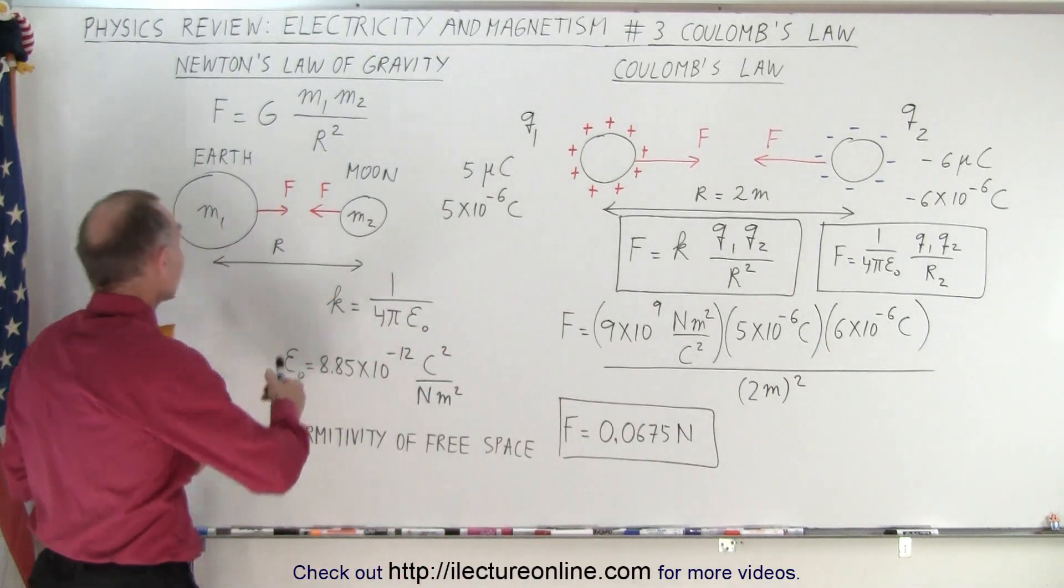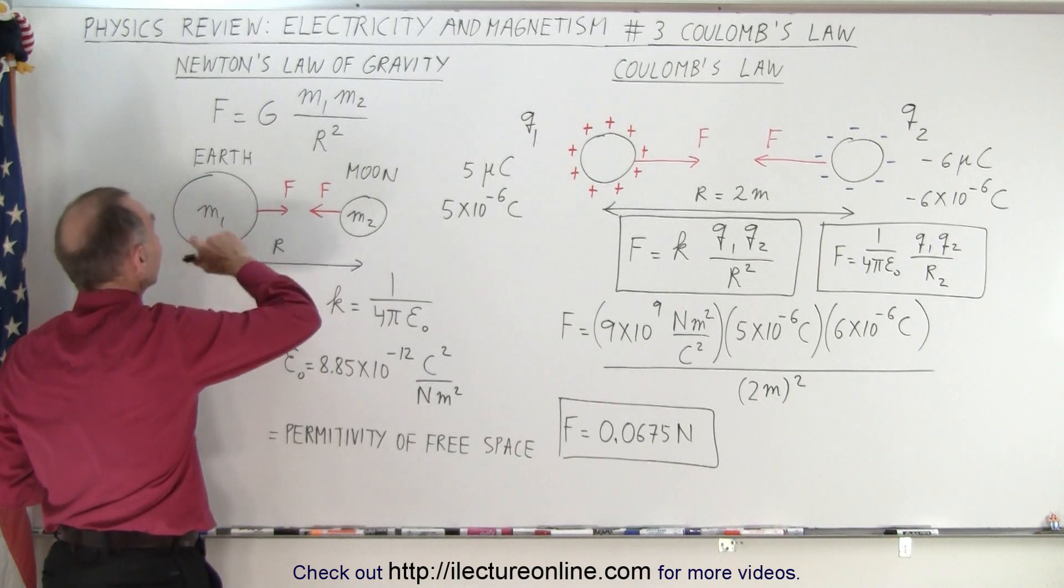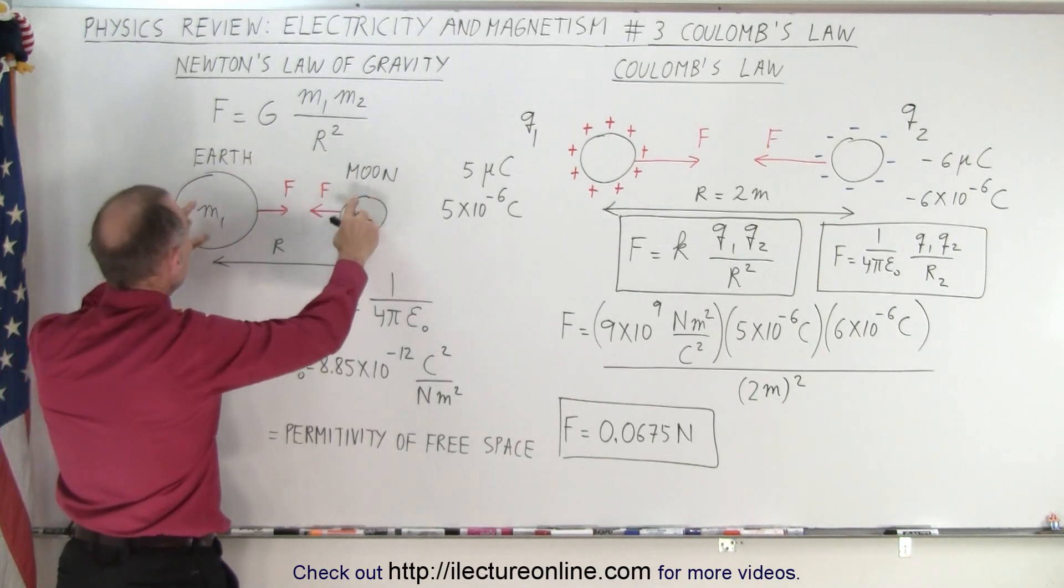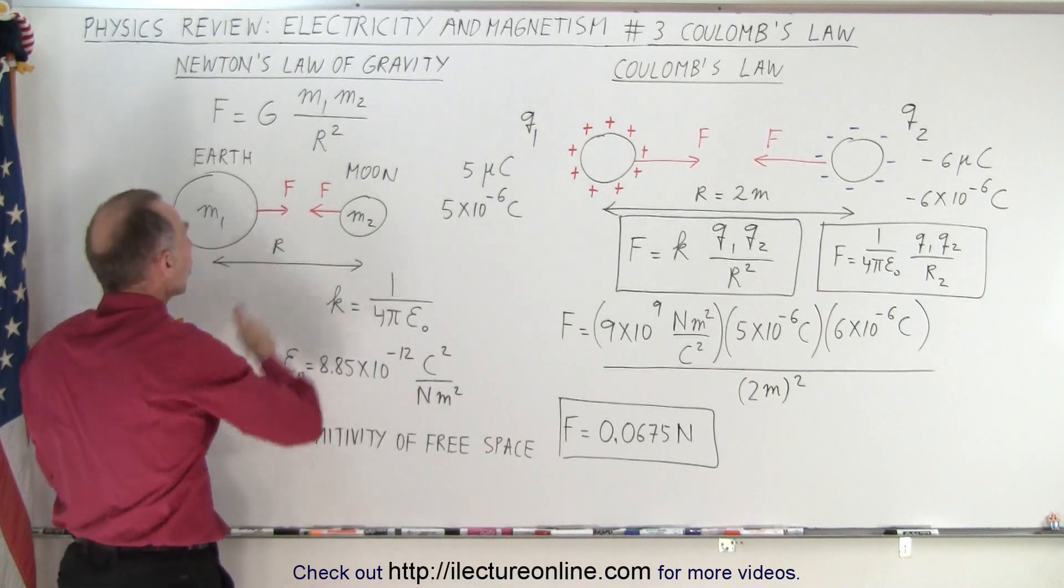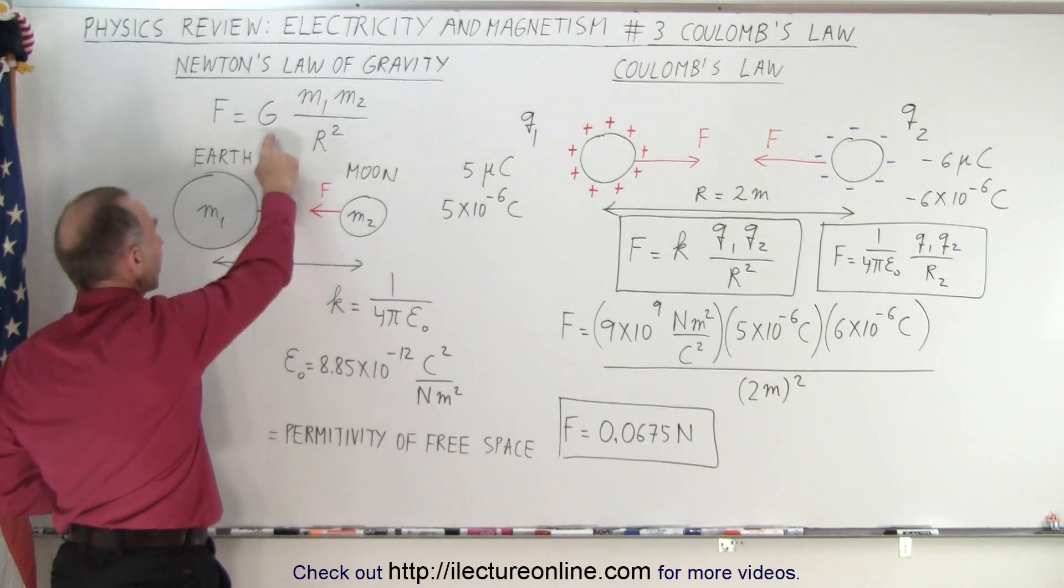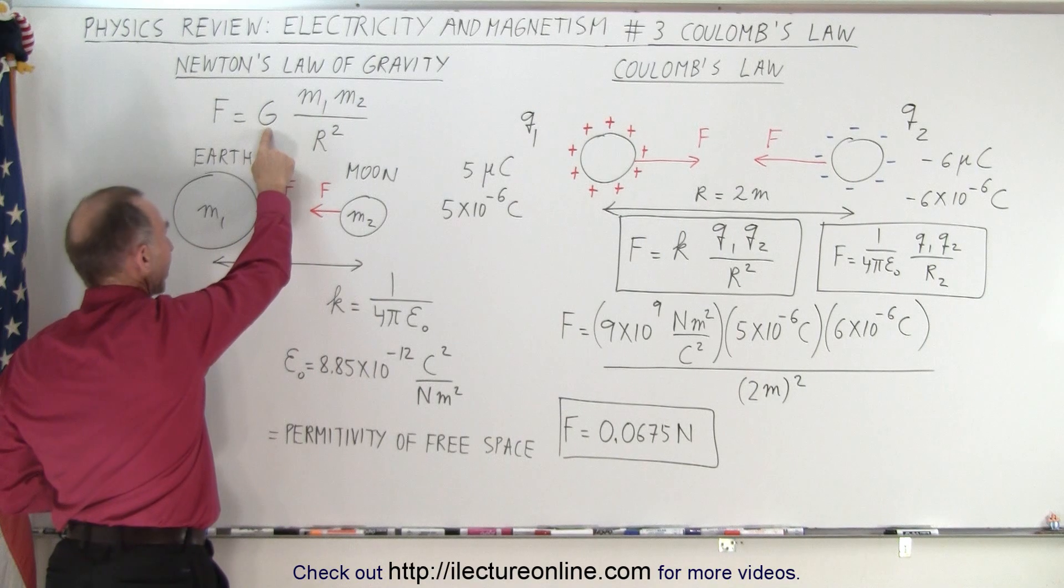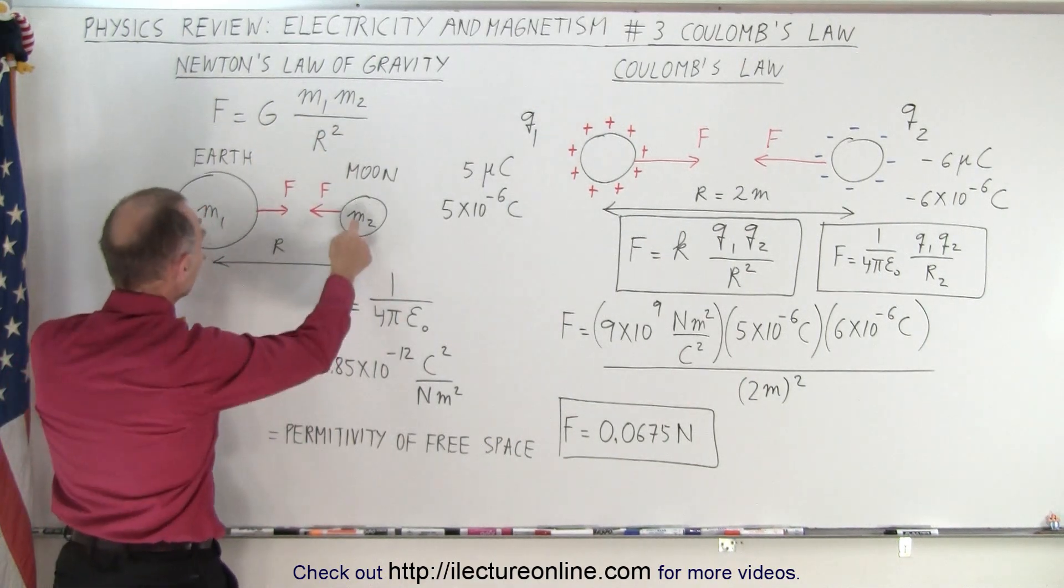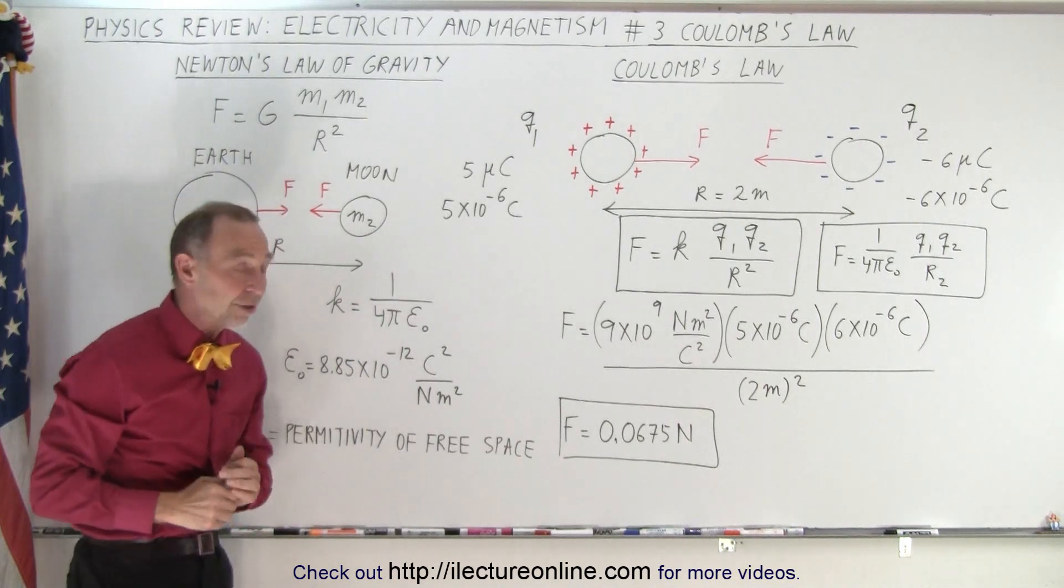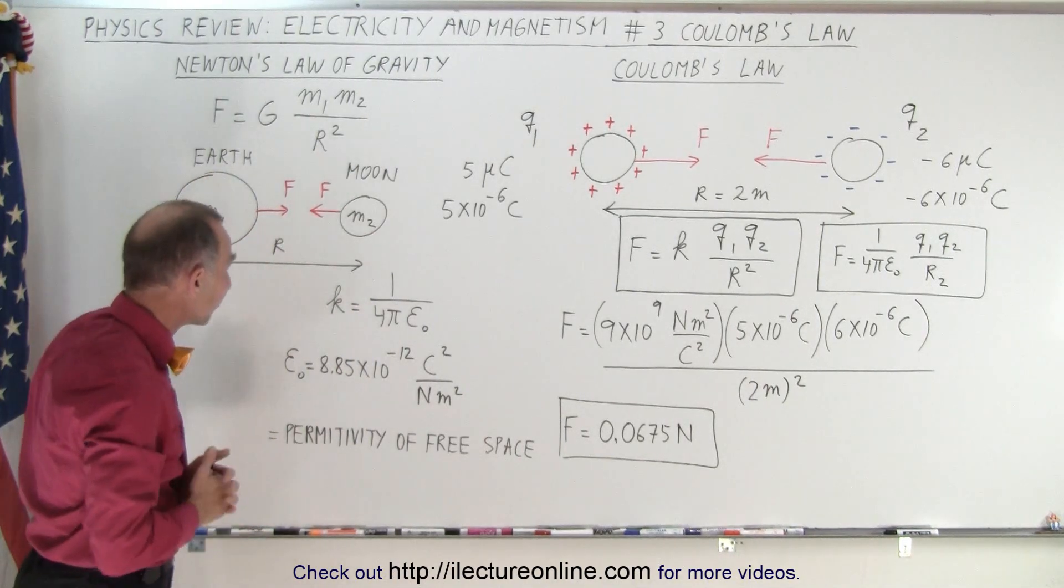We remember from mechanics that Newton's law of gravity tells us that the force between two objects with known masses m1 and m2 will attract one another according to this equation. We have the universal constant of gravity, we have the product of the masses divided by the distance between them squared, and it is indeed the distance of the center of masses.